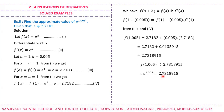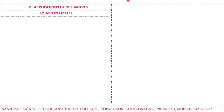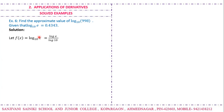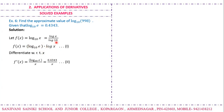The next example: find the approximate value of log₁₀(998), given that log₁₀(e) = 0.4343. We take f(x) = log₁₀(x), which can be written using the change of base property as log₁₀(e) · ln(x). Differentiating, f'(x) = log₁₀(e) · (1/x) = 0.4343/x.